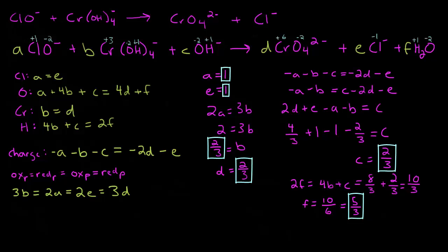Since we have fractions, we want to use the smallest possible integers for our balanced chemical equation. Our largest denominator is three, so we'll multiply each variable by three. A equals three times one, so three. B equals two thirds times three, so two. C is also two thirds times three, so two. D is two thirds times three, so two. E is one times three, so three. And F is five thirds times three, so five.